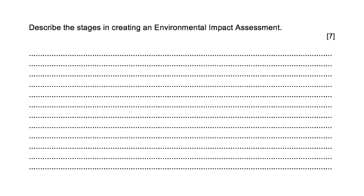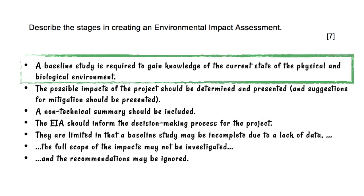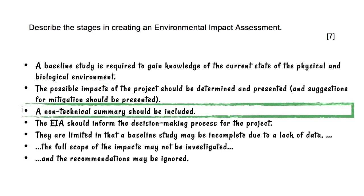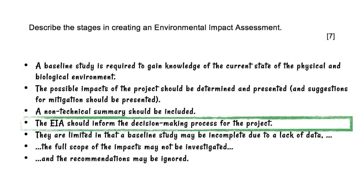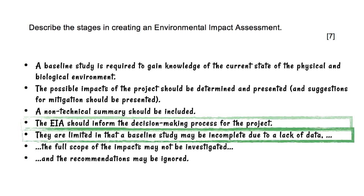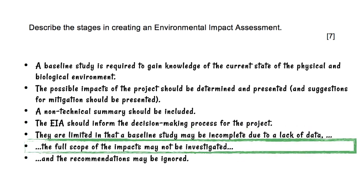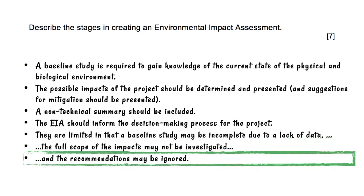Let's look at a possible exam question on this. You might get asked to describe the stages in creating an environmental impact assessment — it's quite a big question at seven marks. First, mention the baseline study: say that it's required and say what it's required for. Next, the impacts of the project must be understood and presented clearly in the report. A non-technical summary must be provided, and it's worth mentioning that the EIA should inform the decision-making process. You can then describe the limitations: the baseline study might not be complete, the full scope of impacts may not have been investigated adequately, and recommendations may be ignored throughout the project.